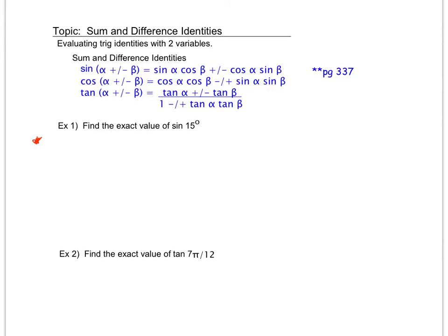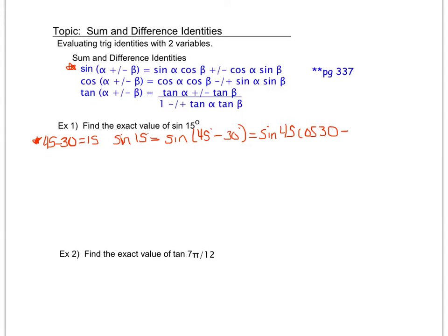However I know that 45 minus 30 equals 15, and both 45 and 30 are on my unit circle. So I can say that sine of 15 degrees is equal to sine of 45 degrees minus 30 degrees. I cannot distribute the sine but I can follow this formula. 45 is in my alpha position, 30 is in my beta position, so that becomes sine of 45 cosine of 30 minus cosine of 45 times sine of 30.